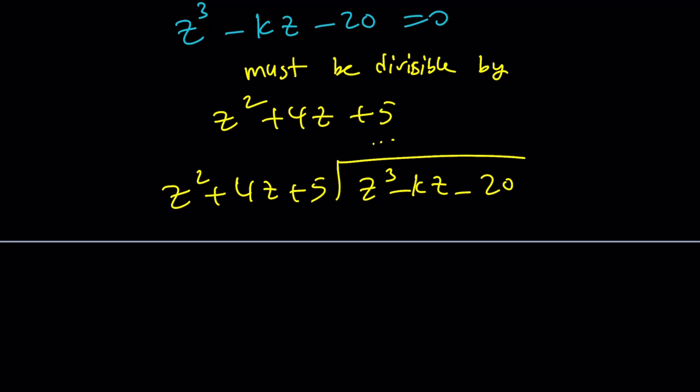And that means you're going to have a zero remainder. Because if the quadratic divides the cubic, there should be no remainders, right? Okay.